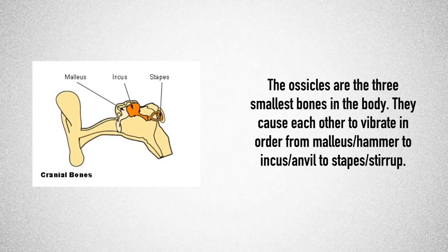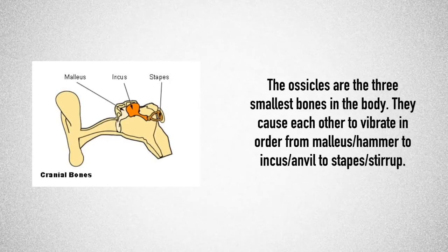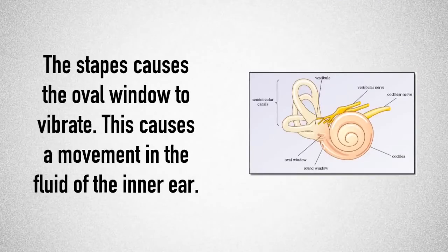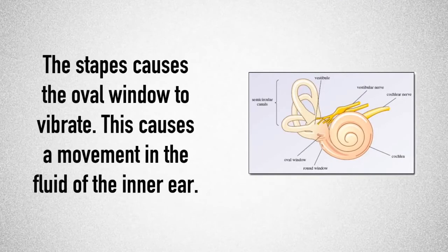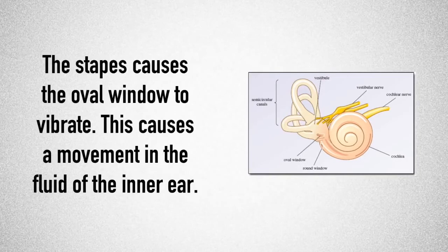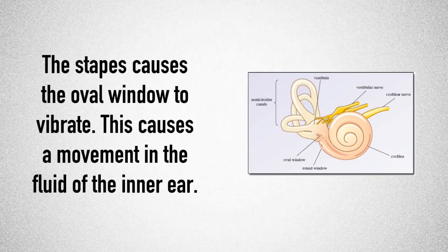Once the vibrations are passed along the three bones, the stapes causes the oval window to vibrate, and this passes the message through into the inner ear.